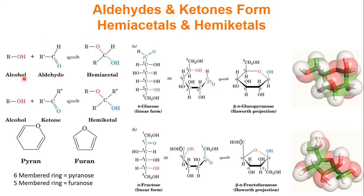If you look at an alcohol plus an aldehyde, or an alcohol plus a ketone, and if you remember back from organic chemistry, this alcohol group can attack the carbonyl carbon, forcing the carbonyl to move those two electrons onto the oxygen. The oxygen will steal a hydrogen from water, and you'll make what's called a hemiacetal or hemiketal.